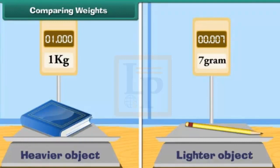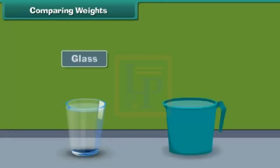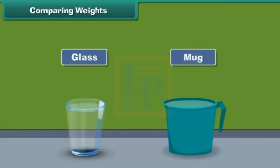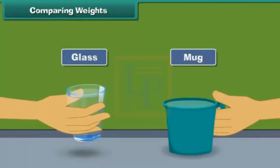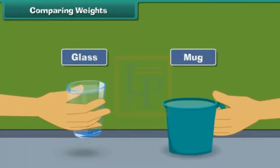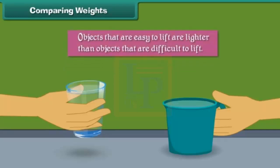A heavier object has more weight than a lighter object. Let us understand it with the help of an example. Fill a glass with water, and fill a mug with water. Try to lift both — which is easier to lift? Quite obviously, the glass filled with water. It is lighter than the mug filled with water. Therefore, we can say that objects that are easy to lift are lighter than objects that are difficult to lift.